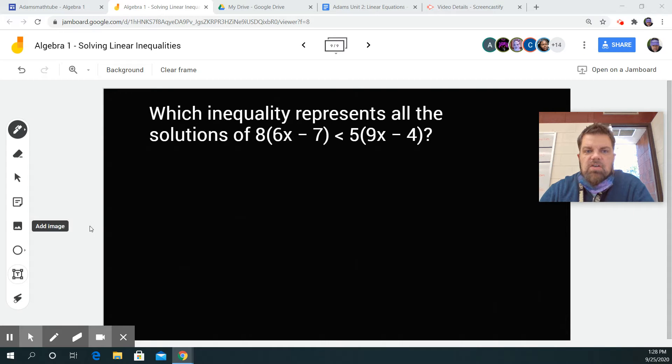So we just got to solve this one as best we can. The first thing I'm going to do is rewrite this. I'm going to say 8 times the quantity 6x minus 7 is less than 5 times the quantity 9x minus 4.